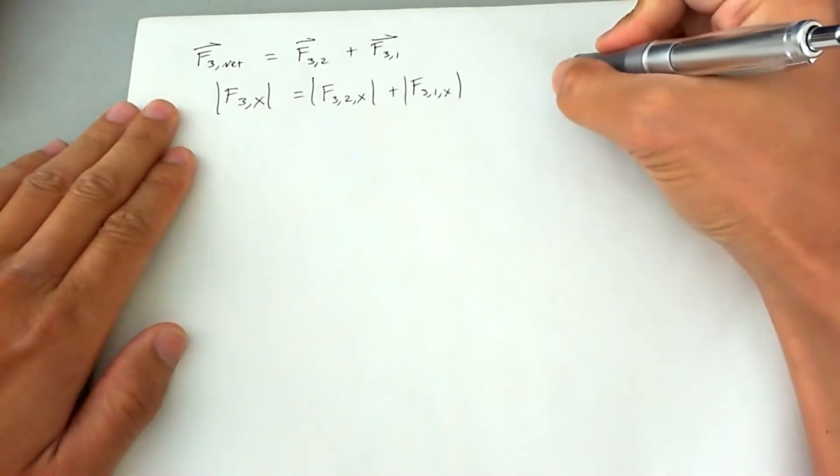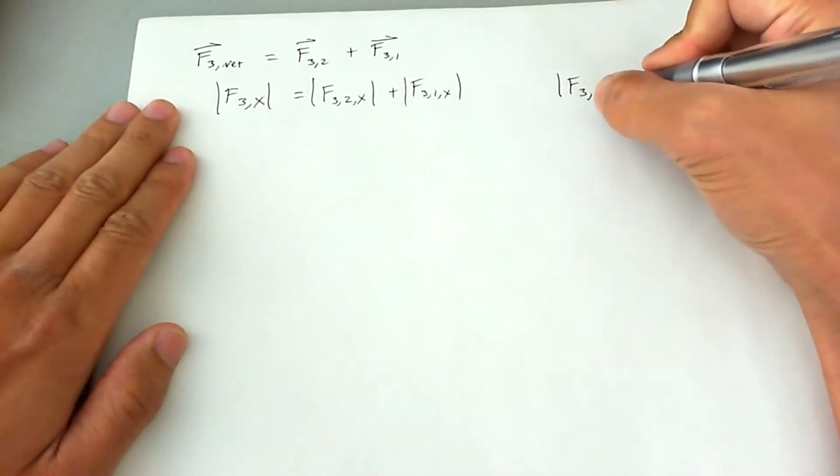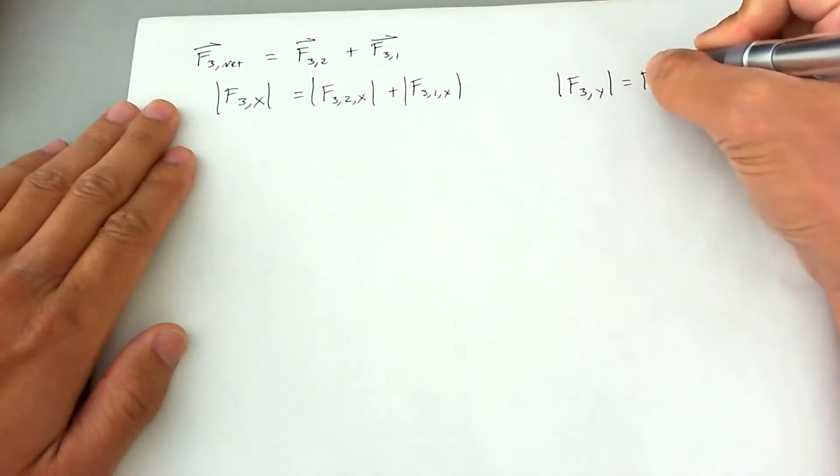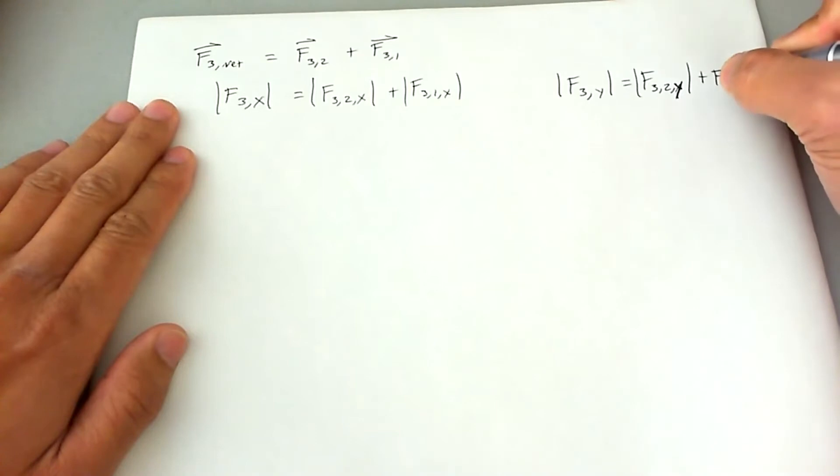We also have the y direction. Force on charge three net in the y direction is equal to the force acting on charge three due to charge two in the y direction, plus the force acting on charge three due to charge one in the y direction.